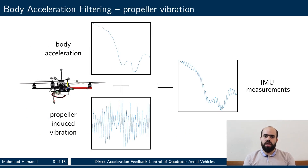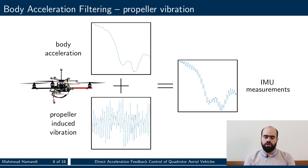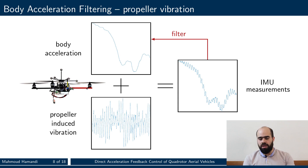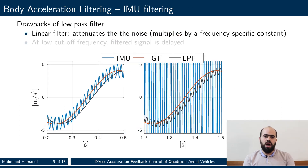We observed that IMU measurements always have noise at the frequency corresponding to the propeller rotational speeds along with their harmonics. As such, the IMU measurement is a combination of low-frequency body acceleration in addition to high-frequency sinusoids at the propeller rotational speeds. Classically, a filter such as a low-pass filter is employed to remove these oscillations.